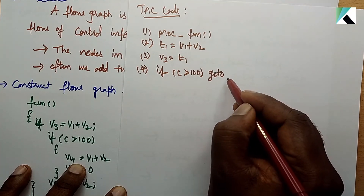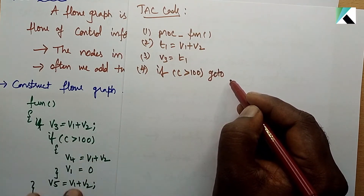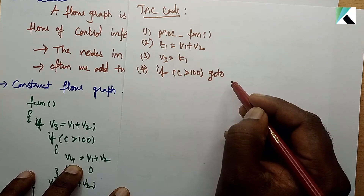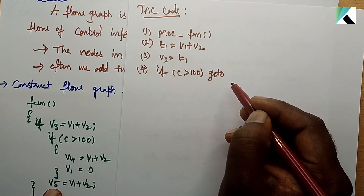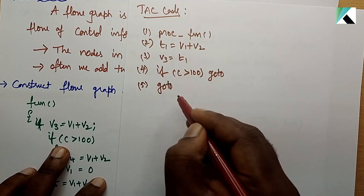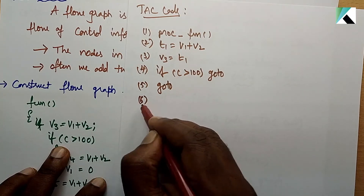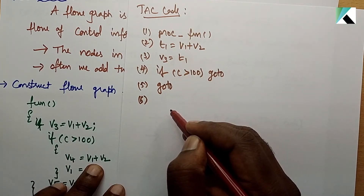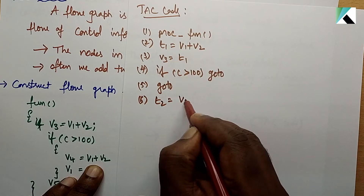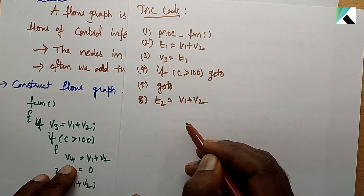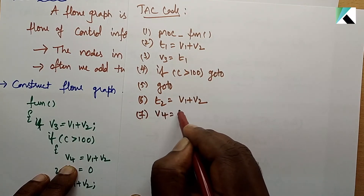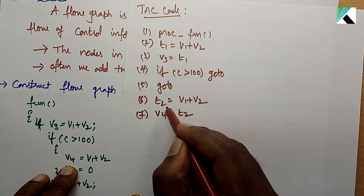Next, v3 is equal to t1. Then v3 is equal to v4, and T1 is equal to v5. Next, v1 plus v2, so t2 variable is v1 plus v2. Then v4 is equal to t2.